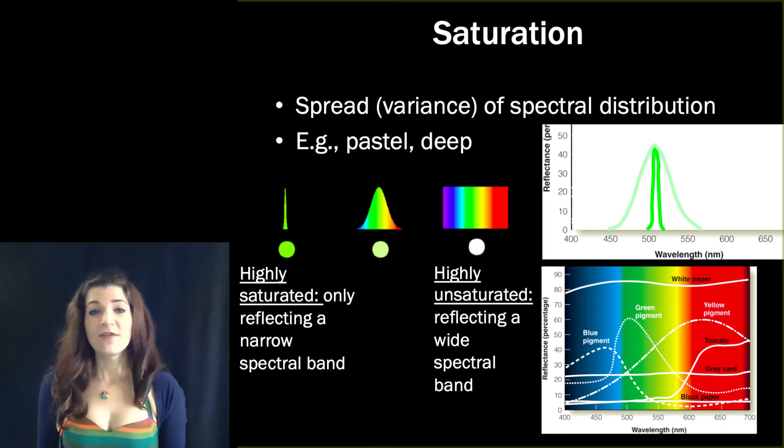When you're painting, one of the things that differentiates better and worse paints, why some are more expensive, is in part because better paints are more highly saturated. It's hard to get chemicals that reflect only a narrow band of wavelengths.